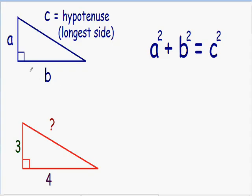In other words, there has to be a 90-degree angle inside the triangle, or there has to be an angle with this little box symbolizing that there is a 90-degree angle. And if you have a right triangle, you can use the Pythagorean formula to find the lengths of all the sides.